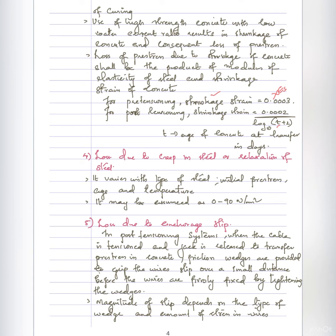The next loss is relaxation of steel, also called creep of steel. This mainly depends on the type of steel and the initial prestress. Temperature also affects relaxation. We assume the initial prestress is 0 to 90 N/mm². The loss due to relaxation of steel is assumed based on these parameters.